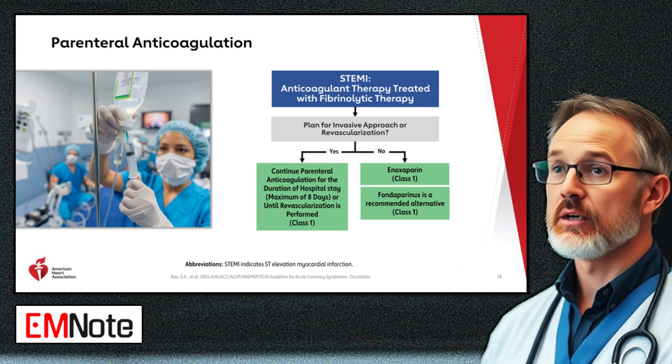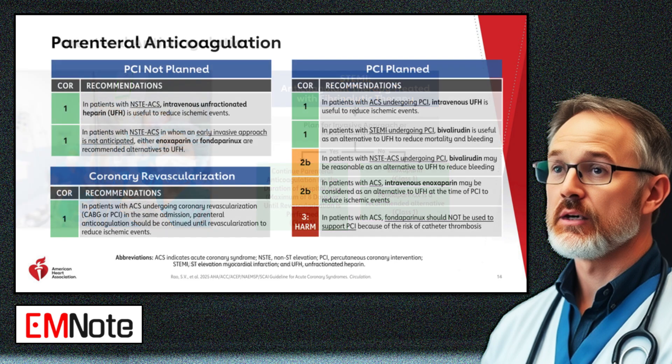Parenteral anticoagulation: Unfractionated heparin is effective in reducing ischemic events in non-ST elevation acute coronary syndromes. Alternatives like enoxaparin or fondaparinux are recommended when early invasive strategies are not planned. Bivalirudin is an alternative to unfractionated heparin in ST elevation myocardial infarction undergoing percutaneous coronary intervention, reducing mortality and bleeding.